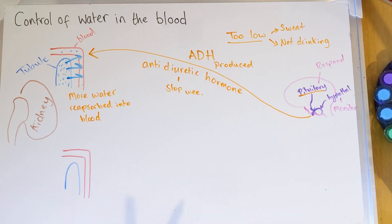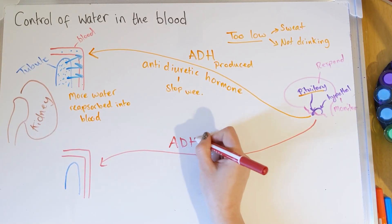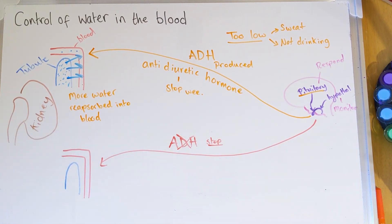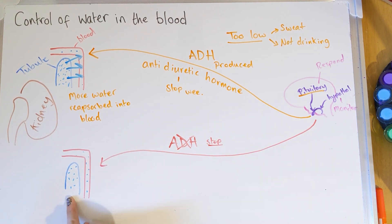That will return the water levels to normal. On the other hand, if blood water levels are too high — the blood is too dilute — the opposite happens. The hypothalamus and pituitary gland are still involved, but rather than producing ADH, the pituitary gland will stop producing ADH or reduce the amount it produces. You stop producing anti-wee hormone, so you wee more and get rid of excess water. Less water moves into the blood, and only a small amount of water will be reabsorbed via osmosis.